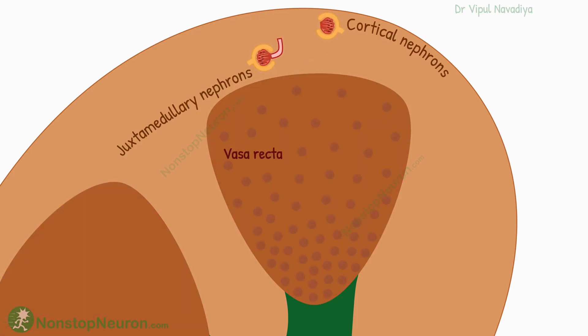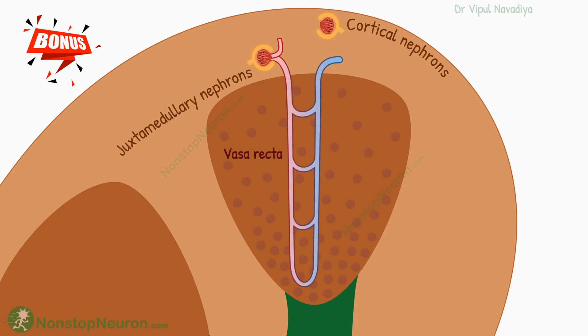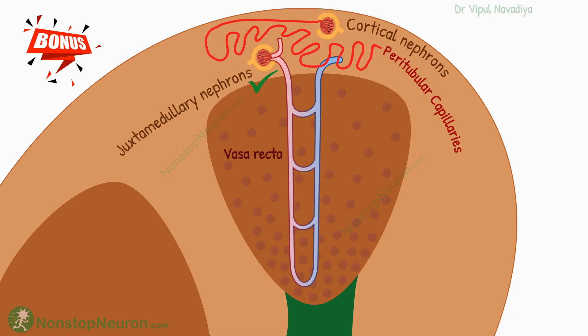As a bonus point: the vasa recta is formed by efferent arterioles of juxtamedullary nephrons. The arterioles from cortical nephrons make the peritubular capillary network in the cortex only. So this was all about the role of vasa recta and countercurrent exchange in maintaining the corticomedullary osmolarity gradient.